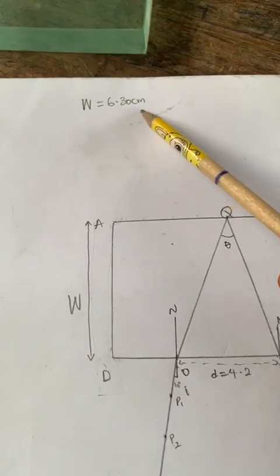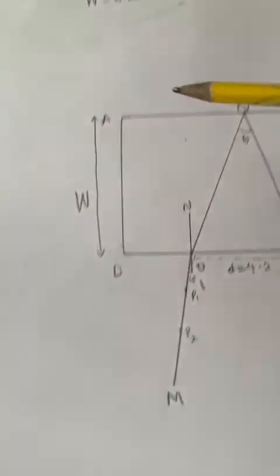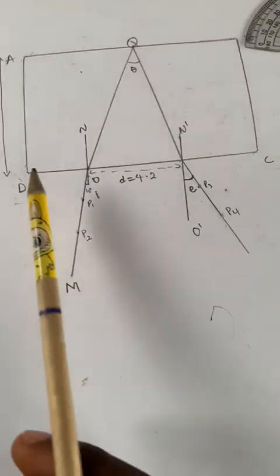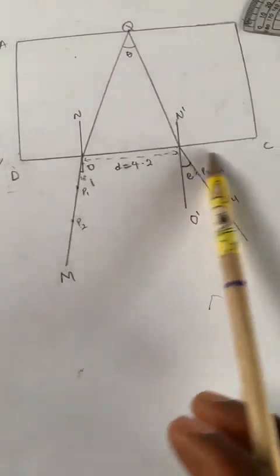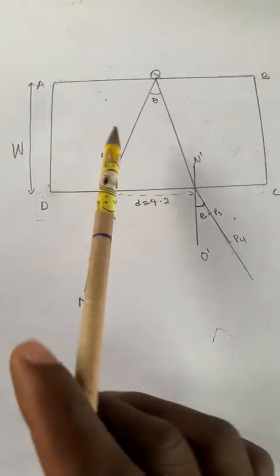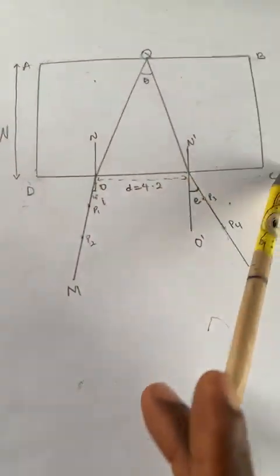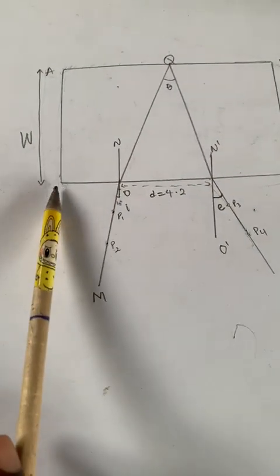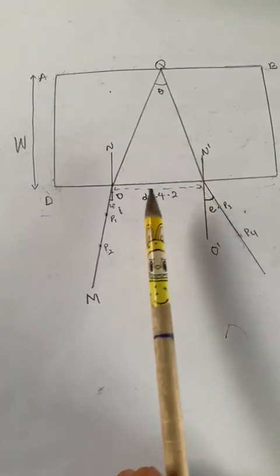We measured that to be 6.30 centimeters. Then we also measure the length DC because we have to label the prism A, B, C, D. We measure DC so in order to put our normal here.